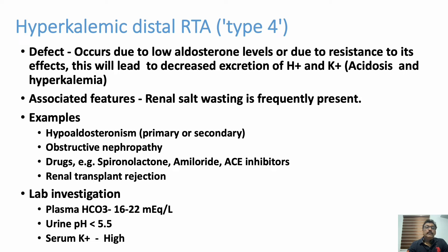The defect in Type 4 occurs due to low aldosterone levels or resistance to its effects, leading to decreased excretion of hydrogen ions and potassium, resulting in hyperkalemia with acidosis. Associated features include renal salt wasting, where sodium and other salts are also lost. Examples include hypoaldosteronism (primary or secondary), obstructive nephropathies, spironolactone, ACE inhibitors, and renal transplant rejection.